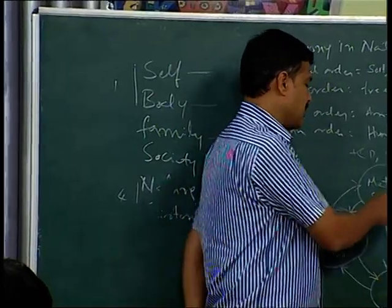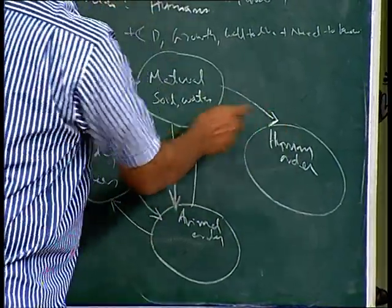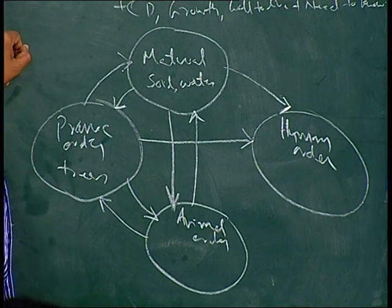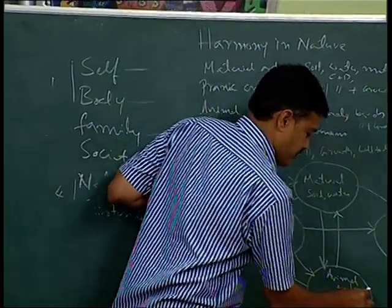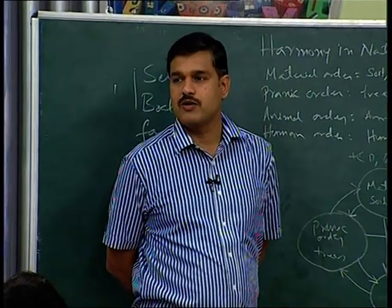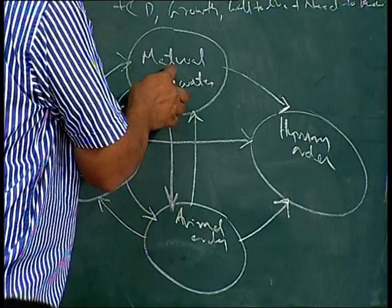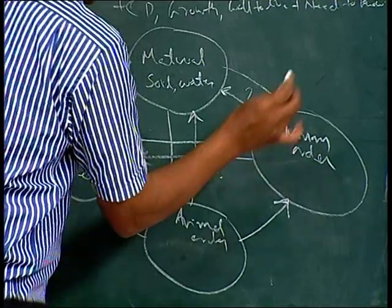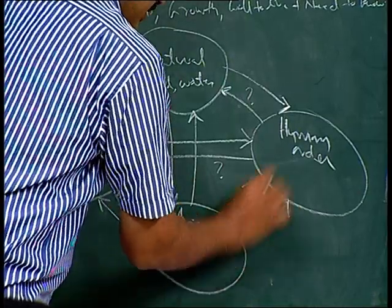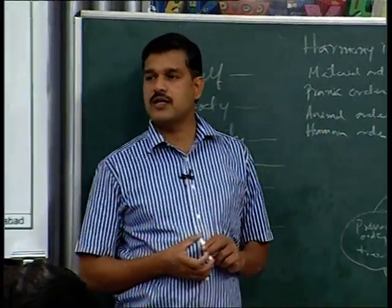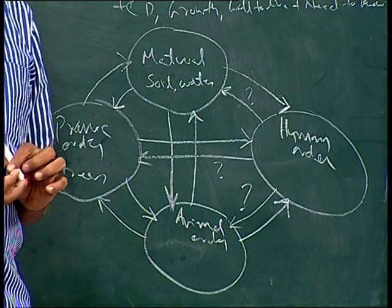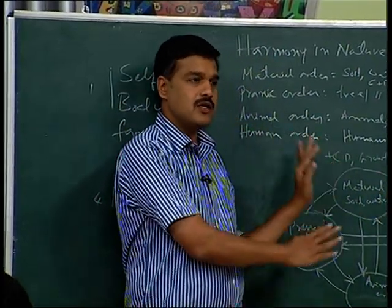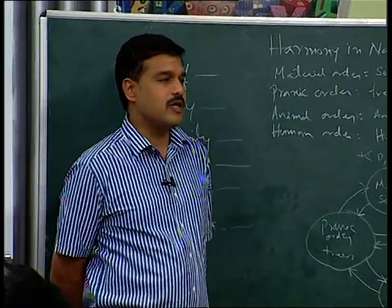Now let us take human beings. Human beings benefit from soil, from trees, from animals and birds. But what are human beings contributing in return? We have polluted soil, water, and air. Forests are coming down. Animal species are getting extinct. If there is meaningful intervention, there is harmony among these three. But with lack of understanding, there is disturbance. If human beings are not interacting, things will be in their natural cycle.